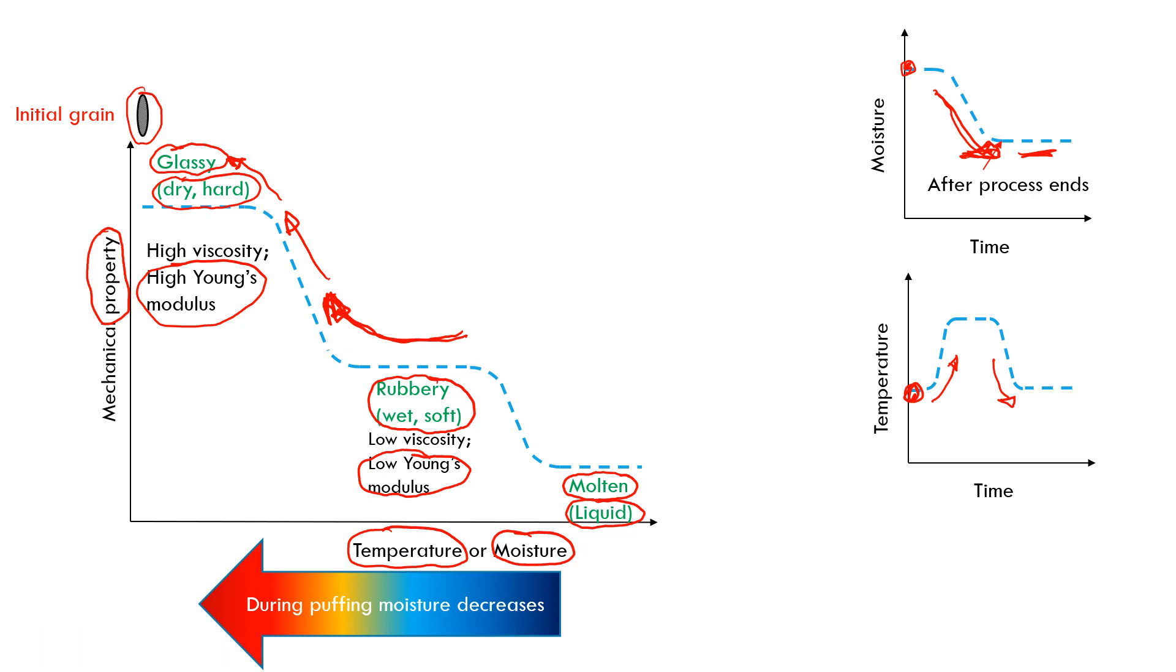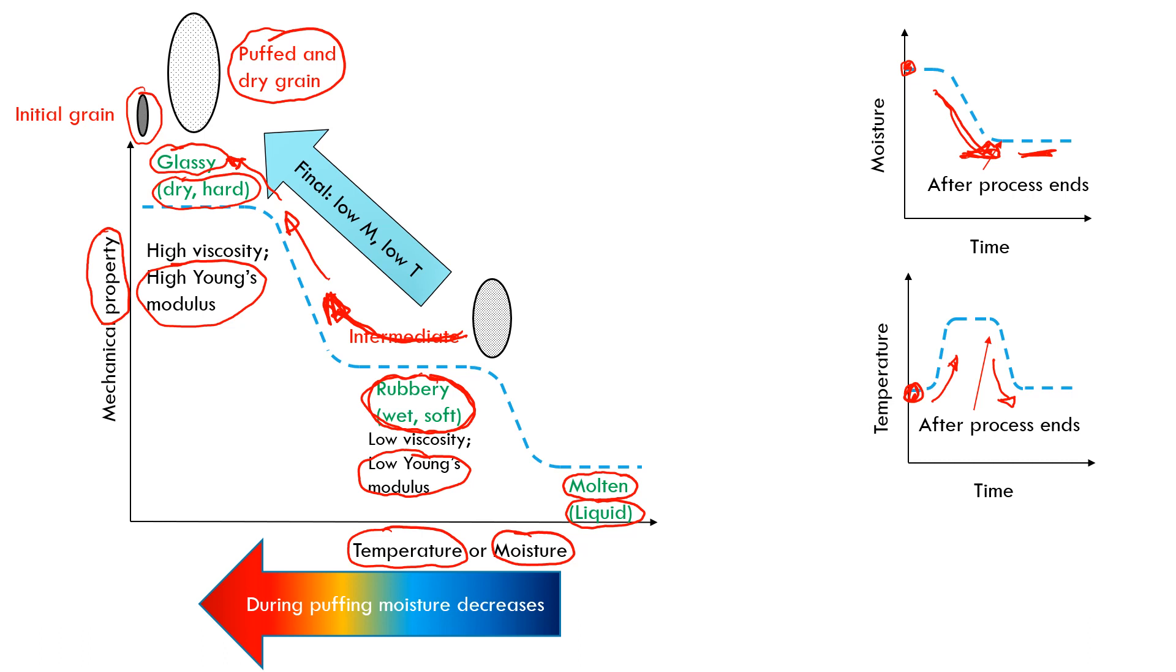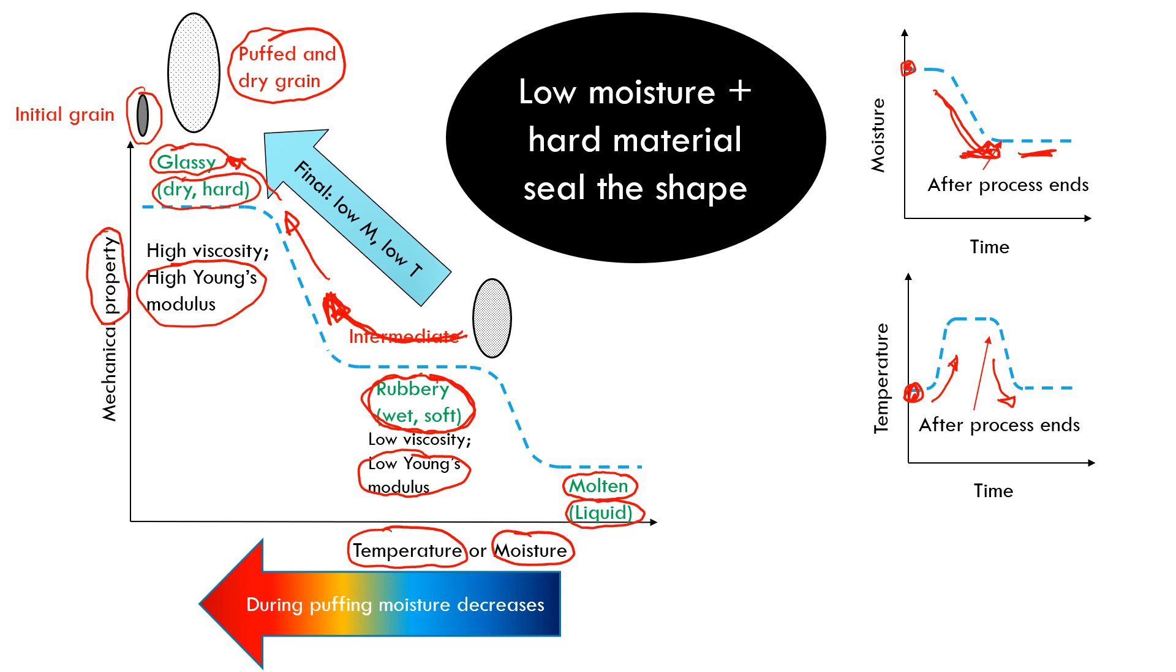But by then, because of the pressures that are generated when it was soft, it has been puffing, so it has now increased in size. But now it's dried and cooled, so it's glassy, it's hard. This increased size that is hard stays there. That's the puffing process.